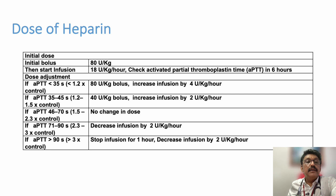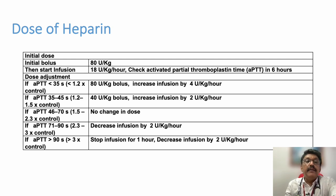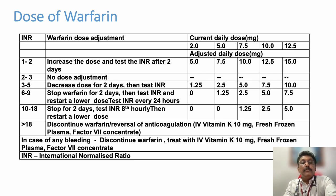For heparin dosing, the initial bolus is 80 units per kg, then 18 units per kg per hour infusion. Activated thromboplastin time (APTT) should be checked at 6 hours. A dosing chart is provided to show how to titrate the heparin dose based on APTT levels. Another chart shows how to monitor and continue vitamin K antagonist therapy — i.e., warfarin. If the patient develops bleeding on warfarin, give vitamin K 10 mg IV and fresh frozen plasma or factor VII concentrate.